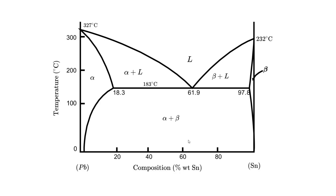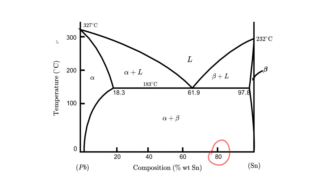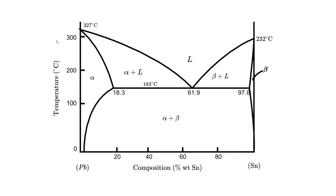Here we have the lead-tin phase diagram, with temperature on the Y-axis. The composition is in percent weight of tin (Sn), so these values — 20%, 40%, 60%, 80%, and 100% — represent only tin. This side of the phase diagram is tin-rich.